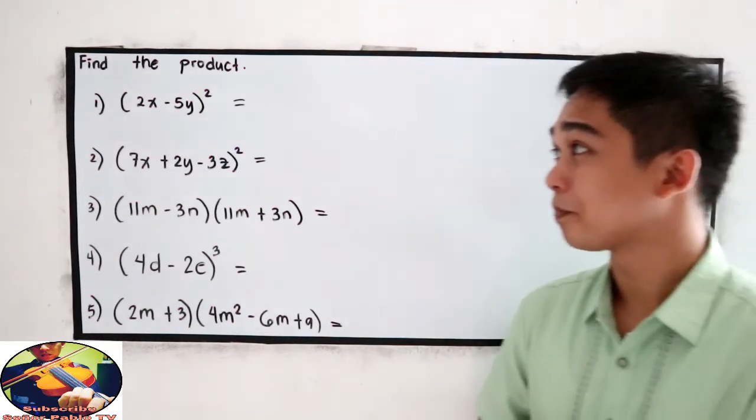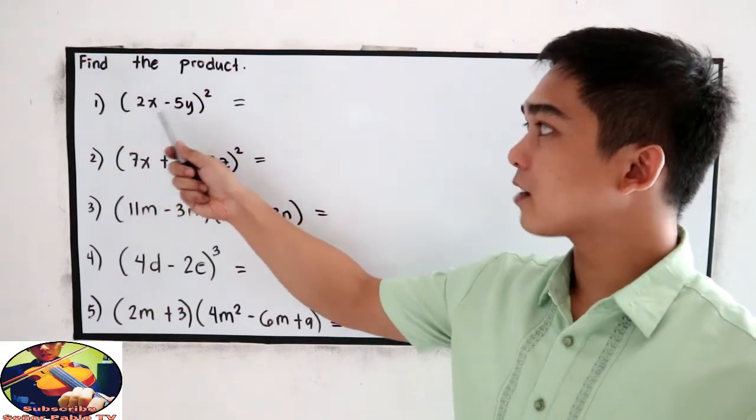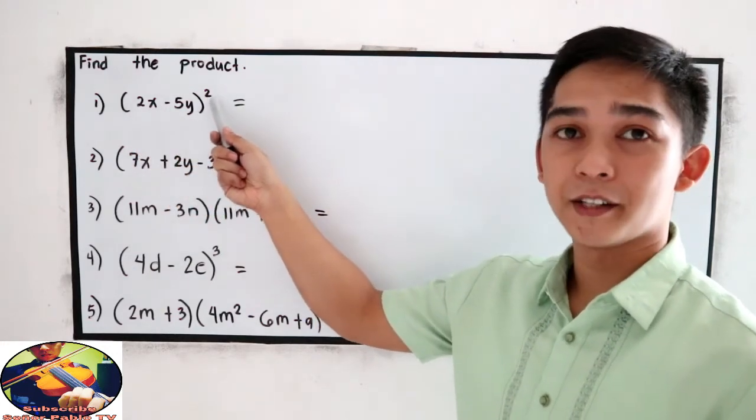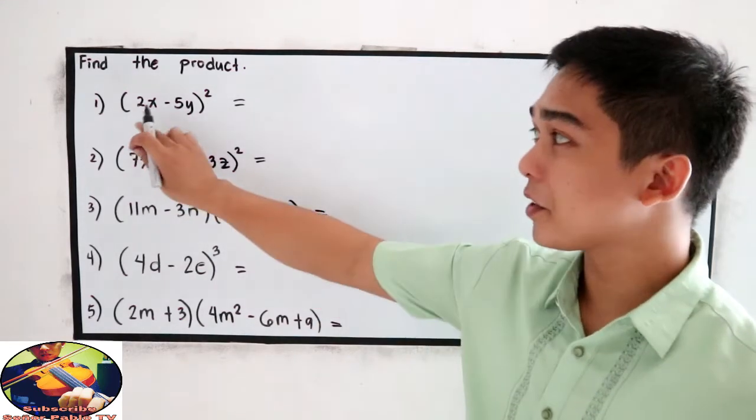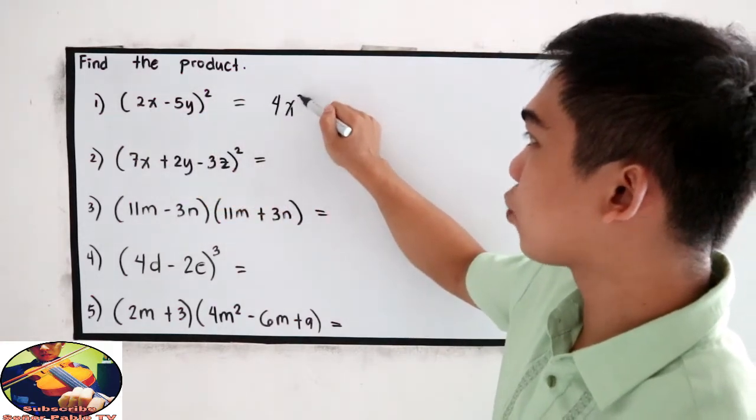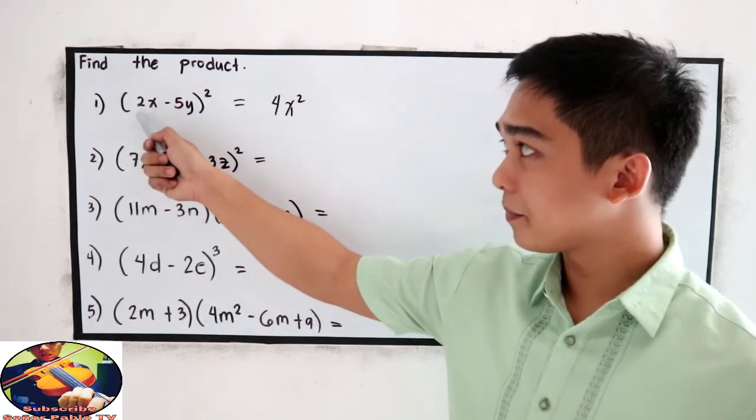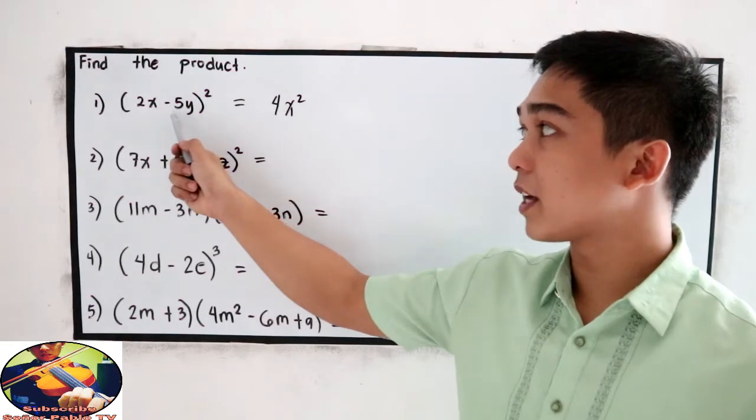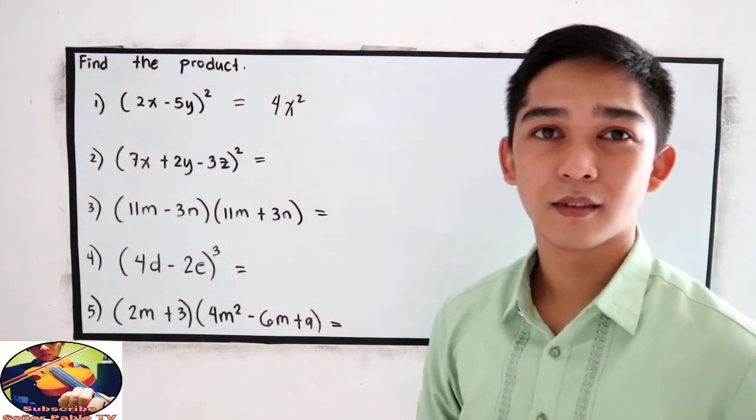Now, let's try number 1. Quantity 2x minus 5y squared. So, our shortcut is, square the first term, that is 4x squared. Next, multiply the first term and the second term. So, 2x times negative 5y, that is negative 10xy, times 2.